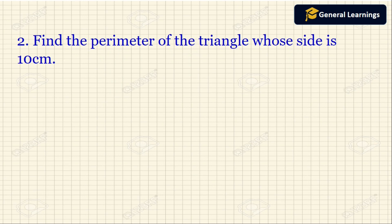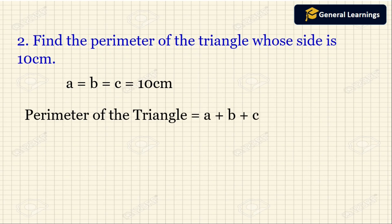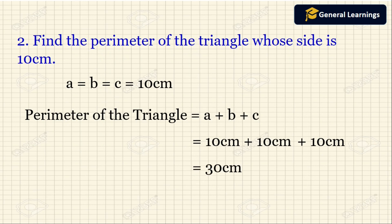Here they have given: find the perimeter of a triangle whose side is 10 centimeter. Here they have given only one side, which means all the sides are the same. So a equals b equals c equals 10 centimeter. The perimeter is a plus b plus c, so 10 plus 10 plus 10 equals 30 centimeter.